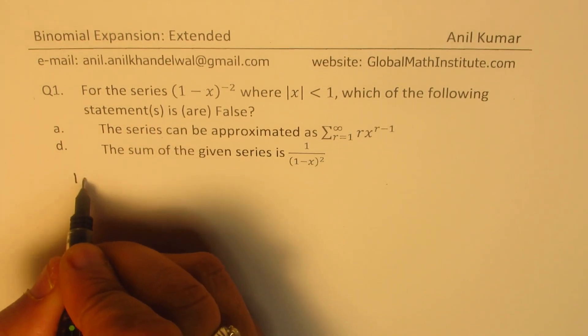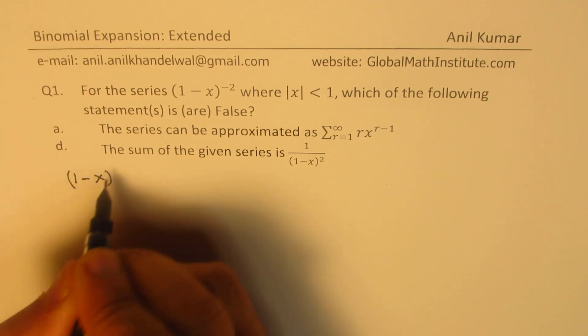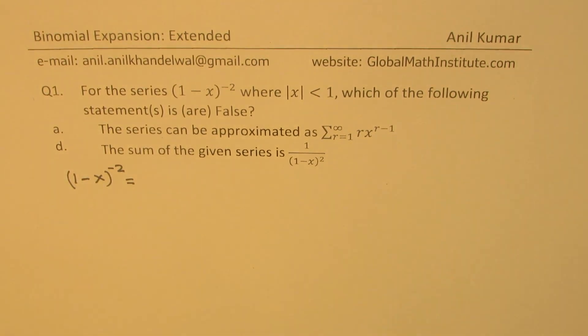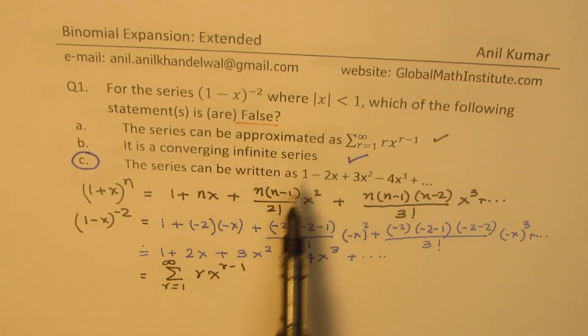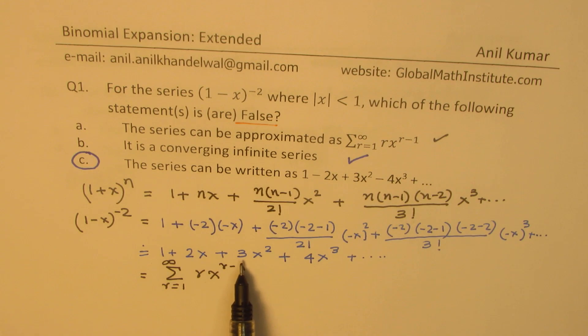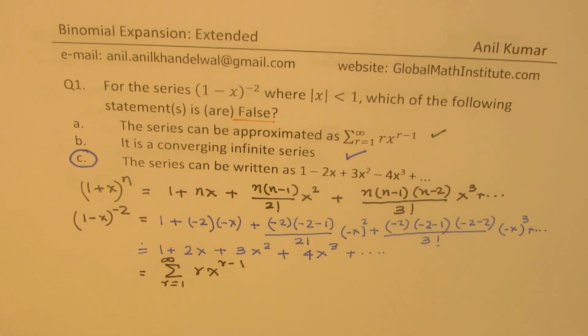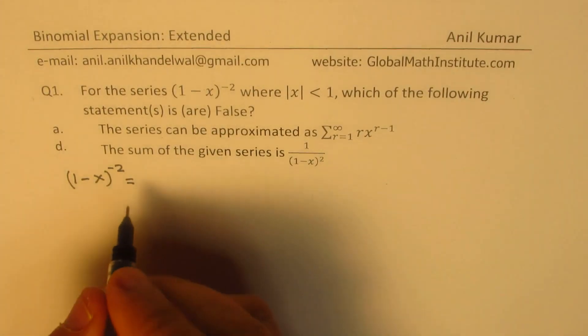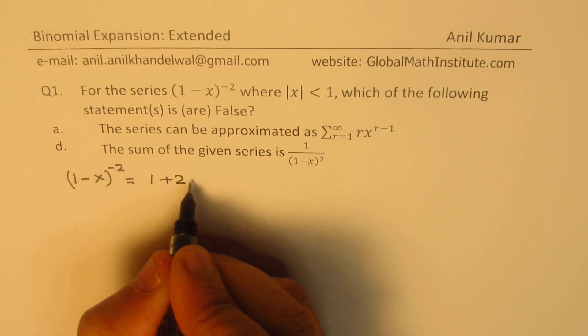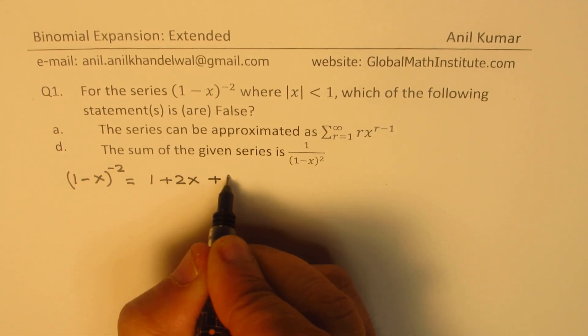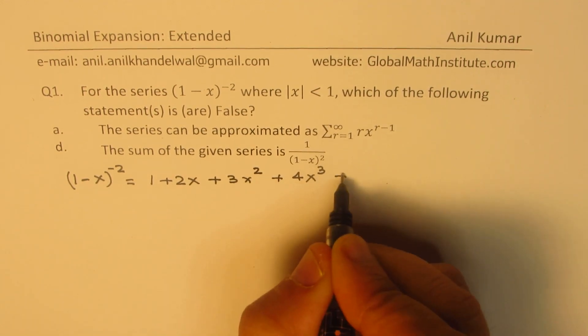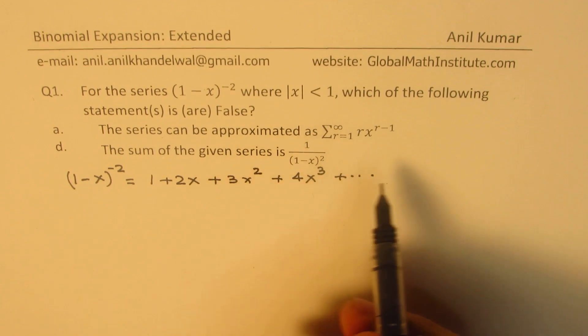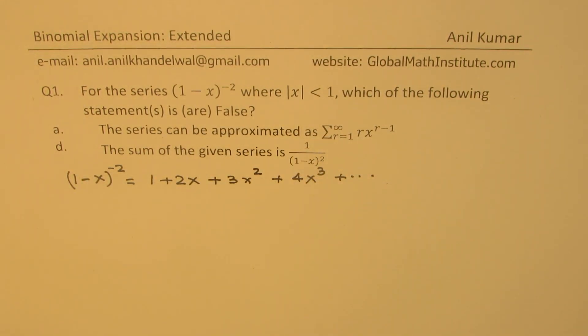Basically, the series (1 - x)^(-2), we wrote this just now as the sum of all these terms: 1 + 2x + 3x² + 4x³ + and so on. Or you could write this as the series given with sigma notation. Perfect.